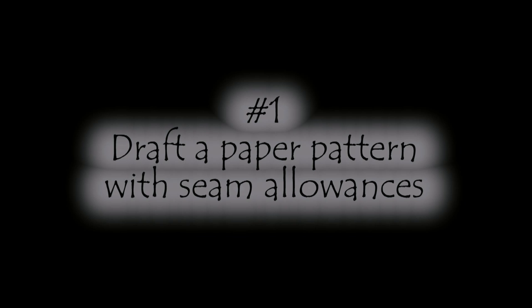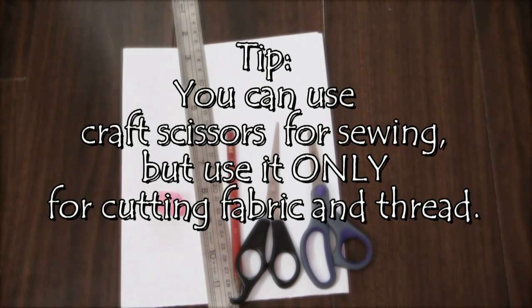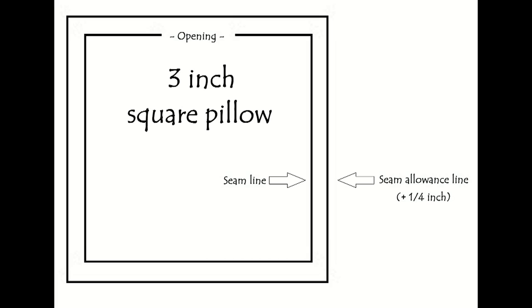What we're going to do is start by drafting the pattern and you're only going to need basic stationery. This is the pattern. It's very simple. It's a three inch square surrounded by a quarter inch seam allowance. So it's basically a three inch square set inside a three and a half inch square.